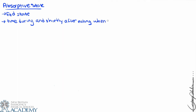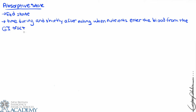The absorptive state is alternately called the fed state, because it's the time during and shortly after eating when nutrients enter the blood from the GI tract. As soon as food enters the GI tract — technically we start secreting enzymes before there's even contact with food — but once there's food in the stomach and small intestine, many hormones and enzymes are secreted to ensure everything is broken down.